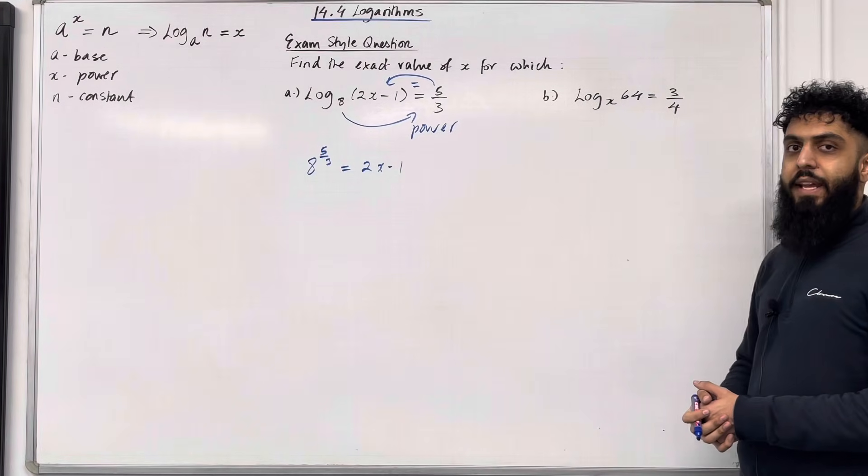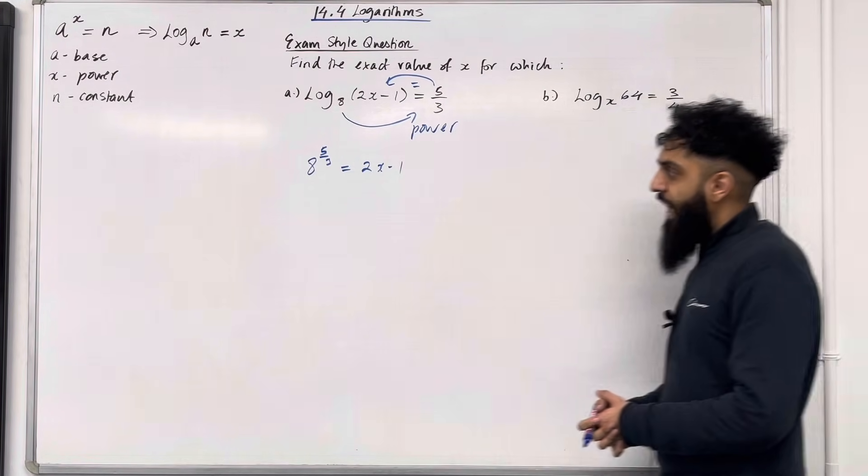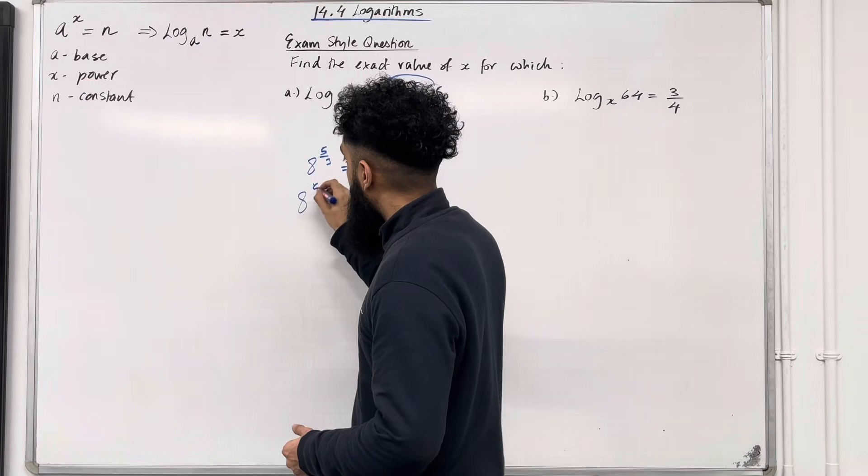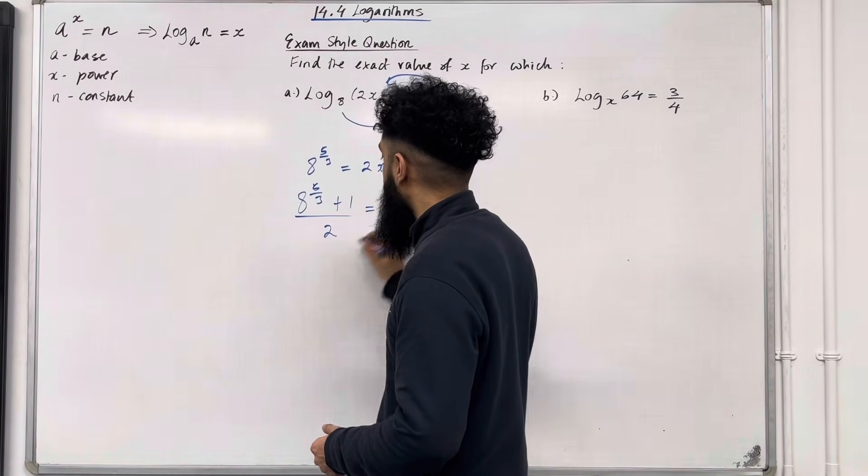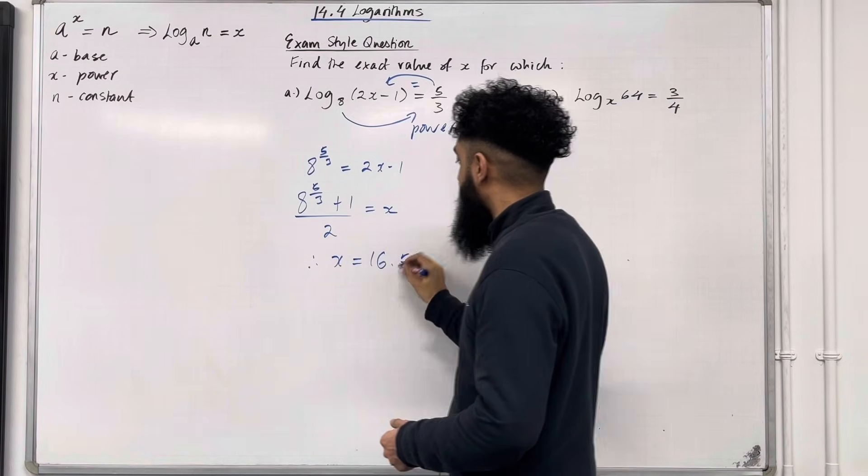Now we can rearrange and make x the subject. So we have 8 to the power 5 over 3 plus 1 divided by 2 equal x. Therefore x is equal 16.5.